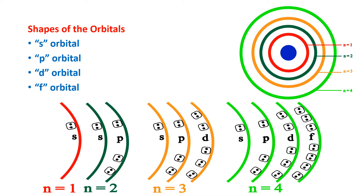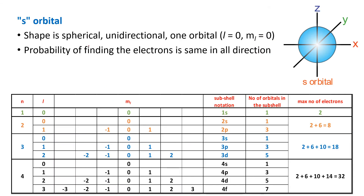Each and every orbital has a shape, so hence we can call it the shapes of the orbitals. In the orbitals, the finding of the electron is maximum. Now let us discuss each topic about s, p, d, and f orbitals and how the electrons move.